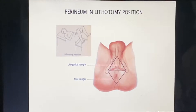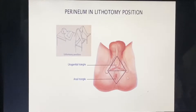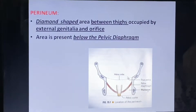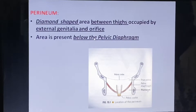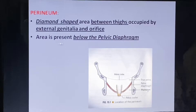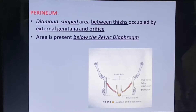The perineum can be seen in lithotomy position. It is a diamond-shaped area between the thighs occupied by the external genitalia and orifice. The area is present below the pelvic diaphragm.